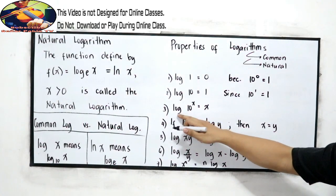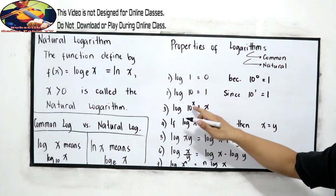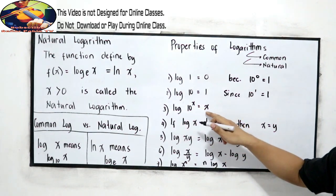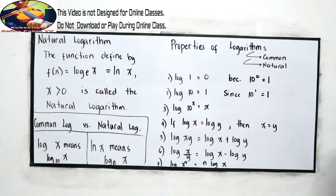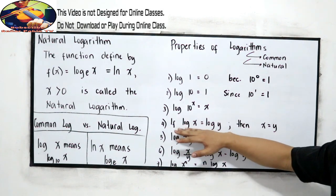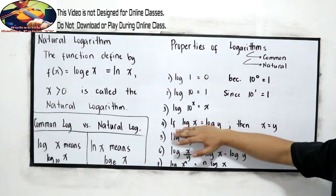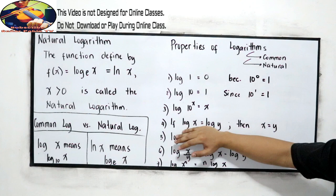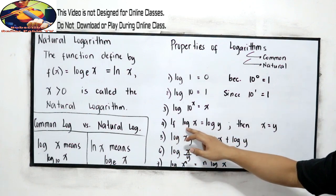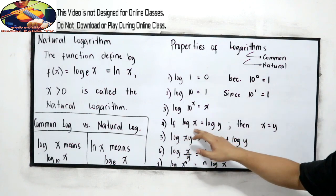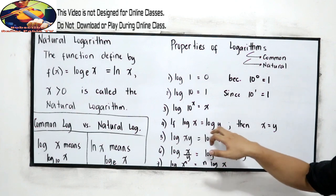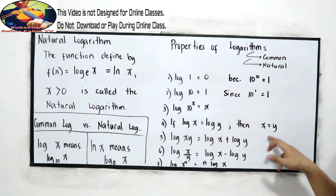Property 3: log of 10 raised to x is equal to x. Property 4: this is the same as our law of logarithm — if log x is equal to log y, then x and y are equal.